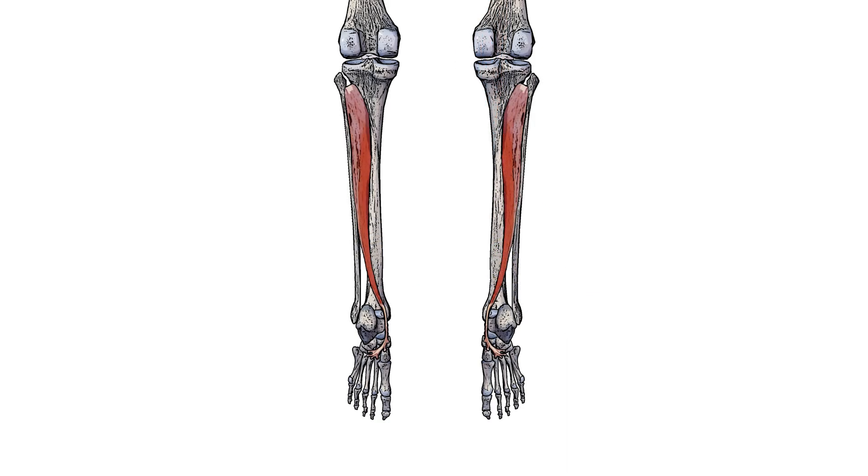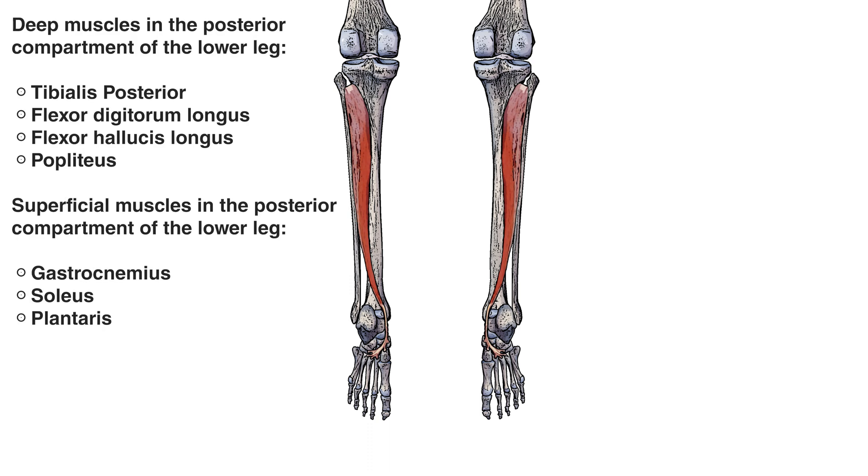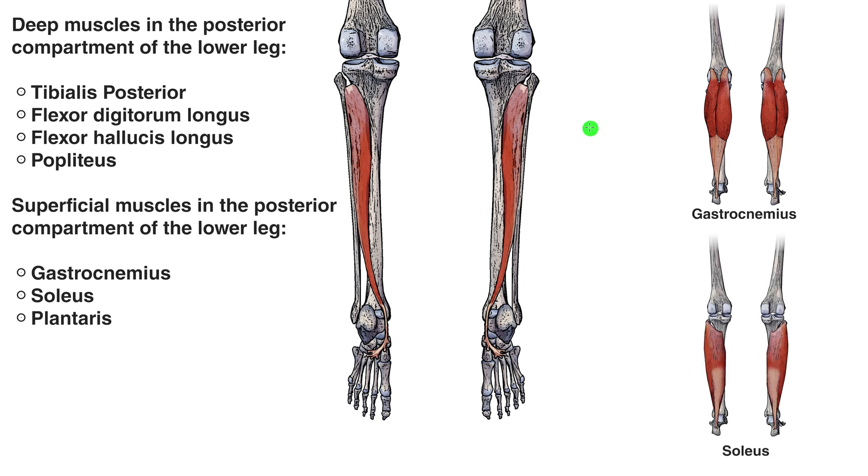The tibialis posterior muscle is the deepest muscle in the posterior compartment of the lower leg. Now it's a muscle which cannot easily be palpated from the skin surface or touched from the skin surface because it's covered by large superficial muscles of the lower leg such as the gastrocnemius and the soleus muscle. Now both these muscles are going to be coming down here and they're going to be covering up this portion of the lower leg, and obviously that's going to be covering up the tibialis posterior muscle as well.